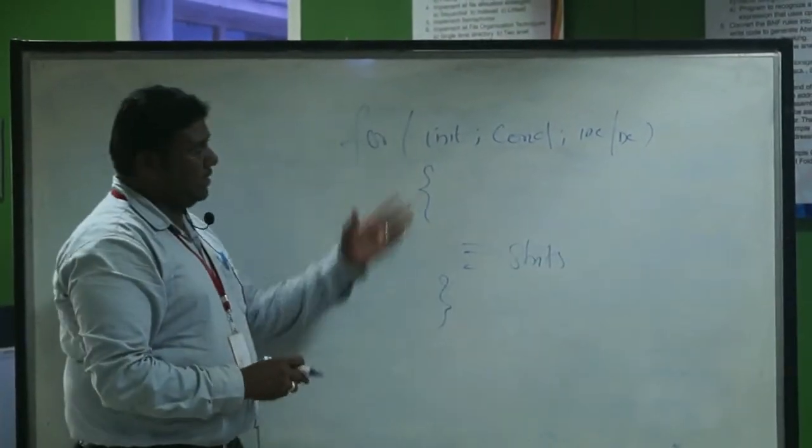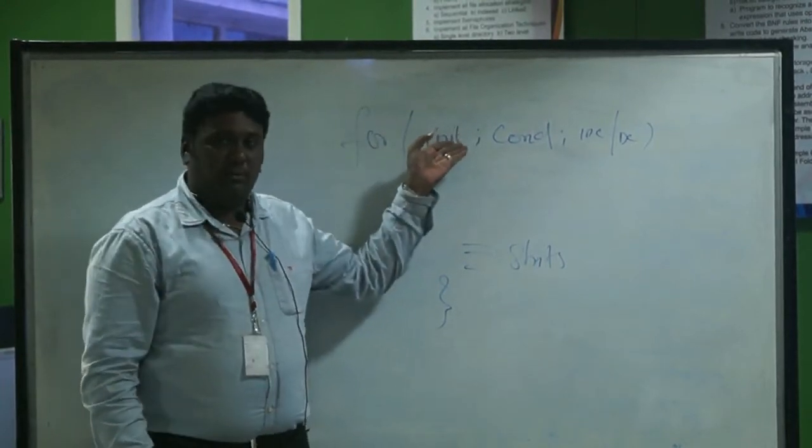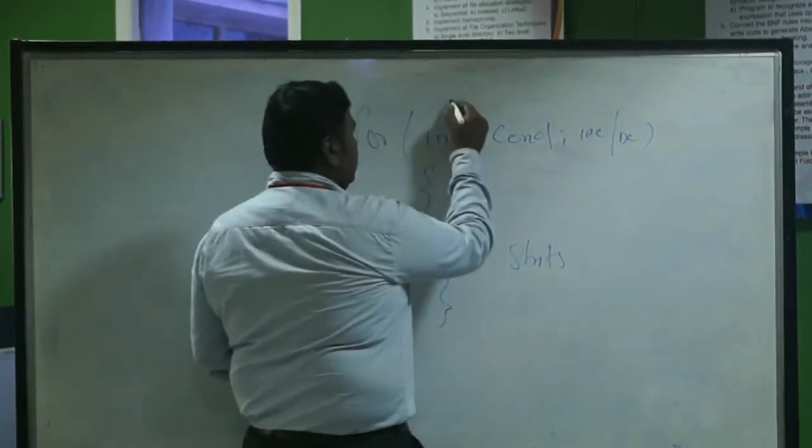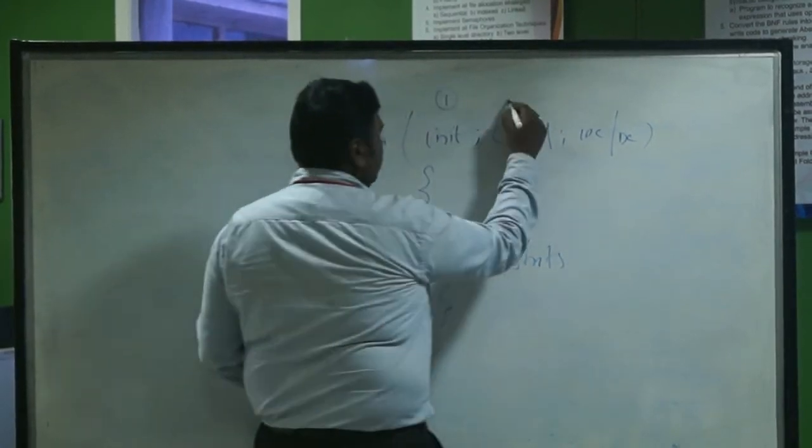Let us see how the for loop executes. Initialization gives the initial value of a variable. This is going to be the first step. Then we will have a condition, this is going to be the second step.